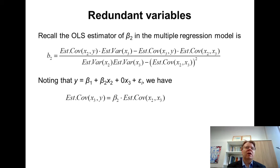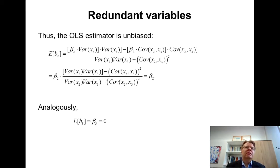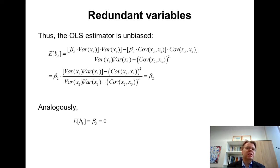This formula also depends on the sample covariance of x3 and y. We can insert in place of y the formula where beta3 is equal to zero. So the sample covariance of x3 with y simply boils down to beta2 times the sample covariance of x2 and x3. The only reason y is correlated with x3 is through this covariance of x2 and x3.